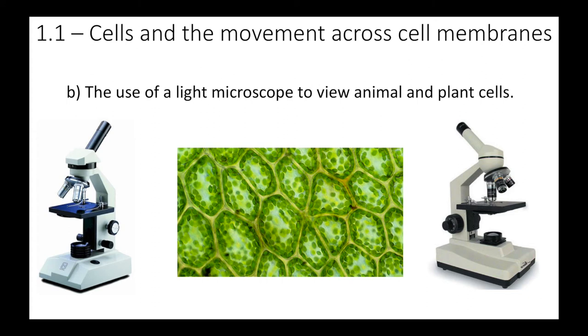Okay guys, so sticking with the cells and the movement across cell membranes, the next part of this unit is about the use of the light microscope to view animal and plant cells. So how do we actually see these cells in action? We're going to use a microscope and there's a few things that you need to know about how to use a microscope.